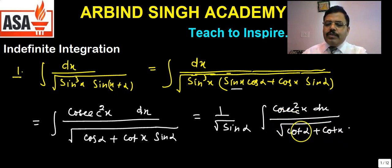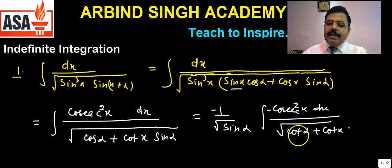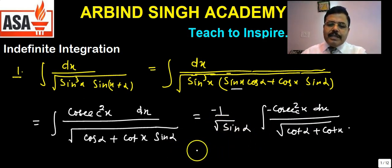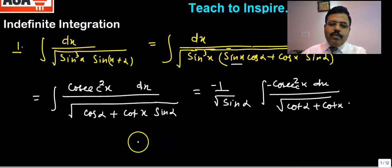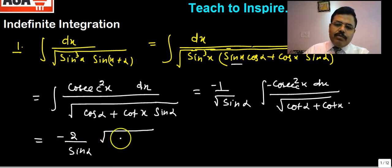Note that inside the root, the derivative of cot α is 0, and the derivative of cot x is −cosec²x. So we multiply by minus both above and below. Now the derivative of what is inside the root appears in the numerator. Since it is under a root, we know that the integral of 1/√f(x) · f'(x) gives 2√f(x). So this is the pattern: two root of the expression inside.